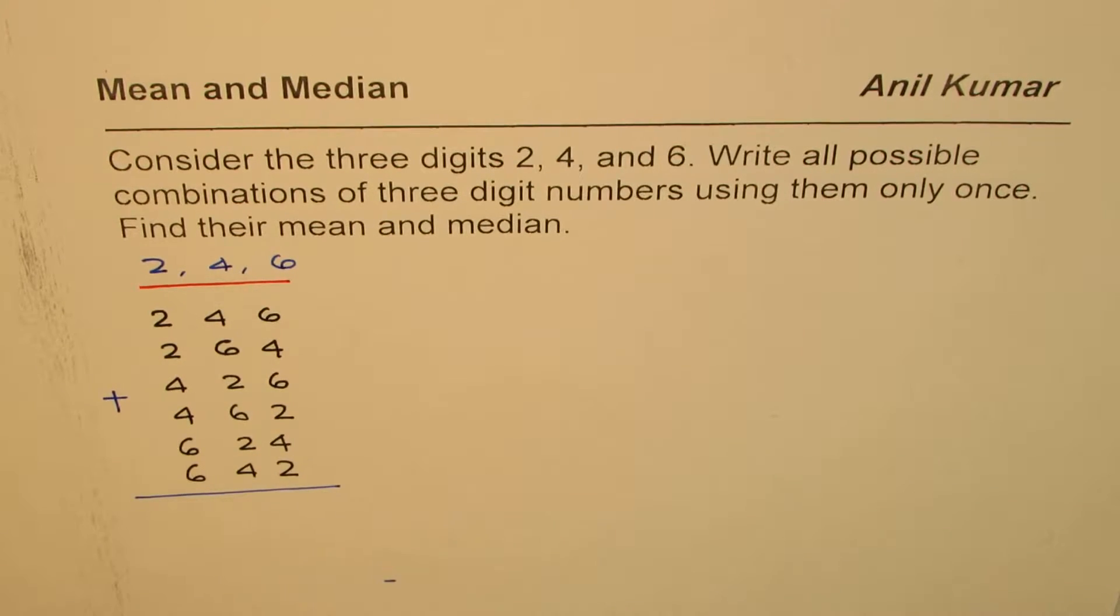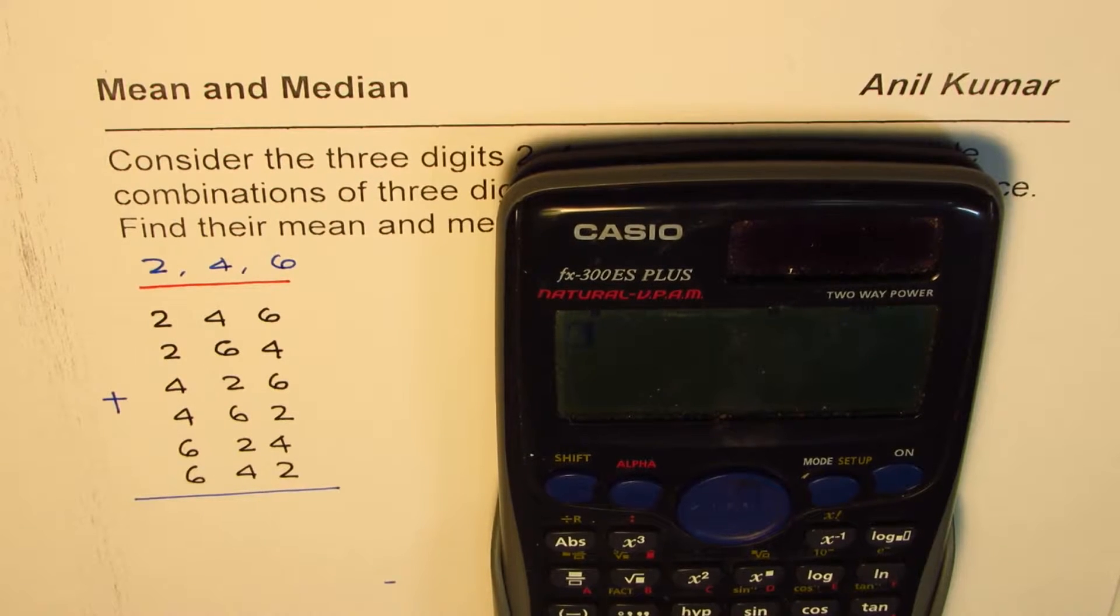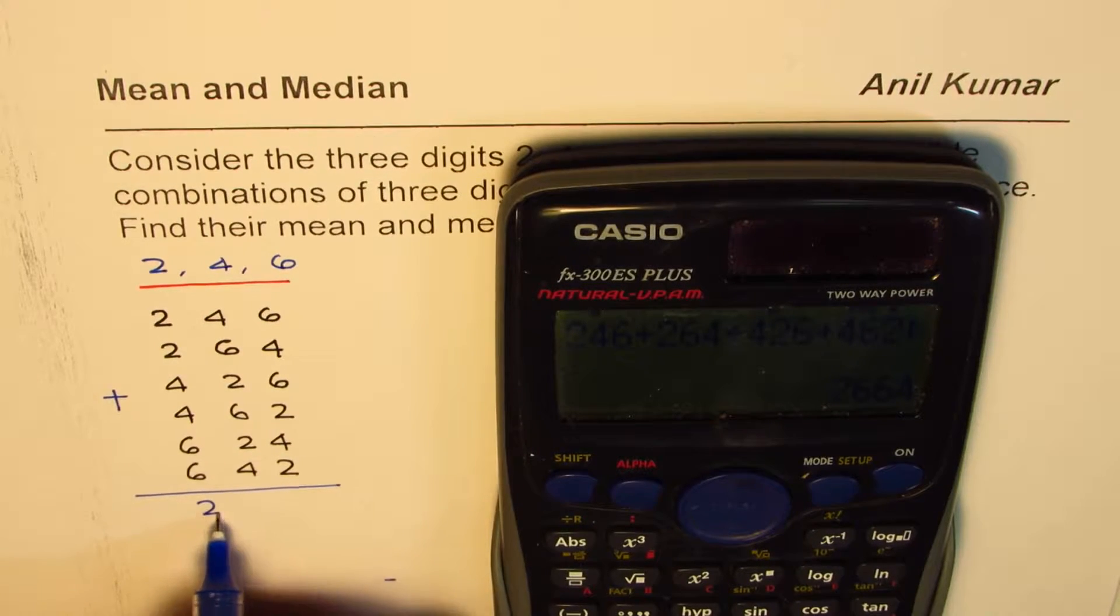Already the numbers are there. Let me add all these numbers. So, let's use calculator to add. So, we have 246 plus 264 plus 426 plus 462 plus 624 plus 642. Equals to, so we get total of 2664. So, that is the total.